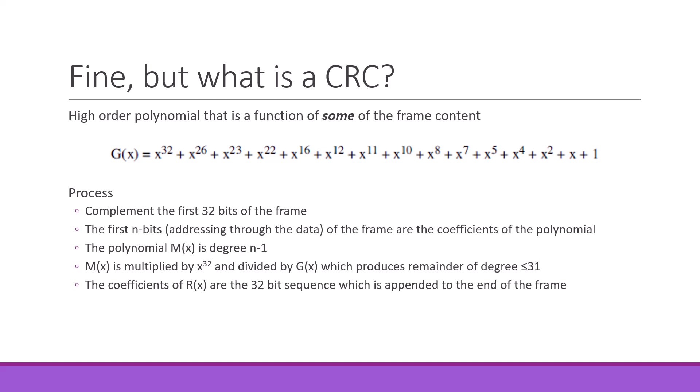The key here is that you have one function divided by another, keeping the degree to a certain level. After all our work with m(x), we multiply it by x^32 and divide by g(x), producing a remainder r(x) with a degree less than or equal to 31 — remember, the degree is the highest power, so 0 through 31. The coefficients of the remainder r(x) form the 32-bit sequence that is appended to the end of the frame. That's how the CRC is actually calculated: a complement, a division, and the remainder is what gets appended.